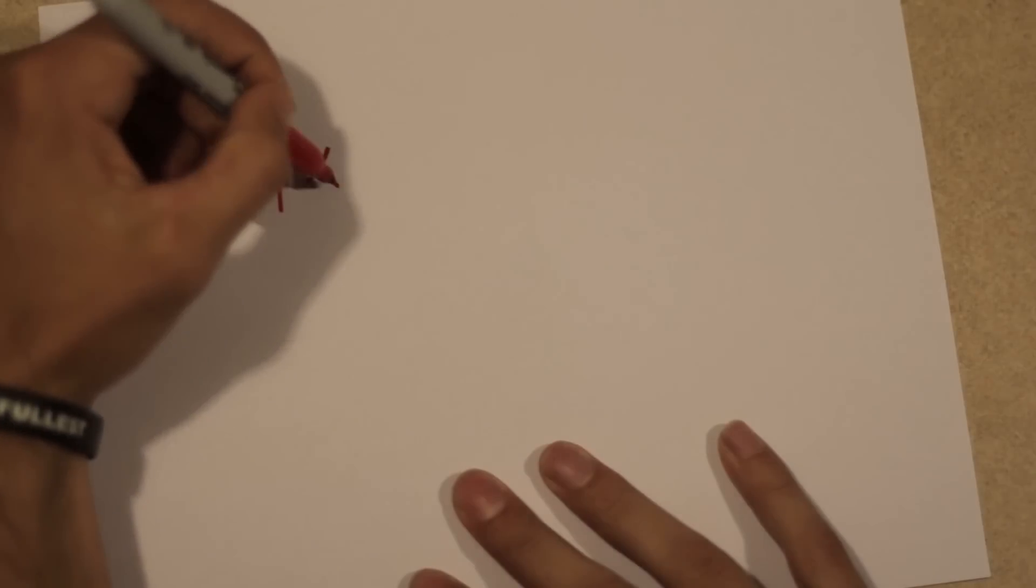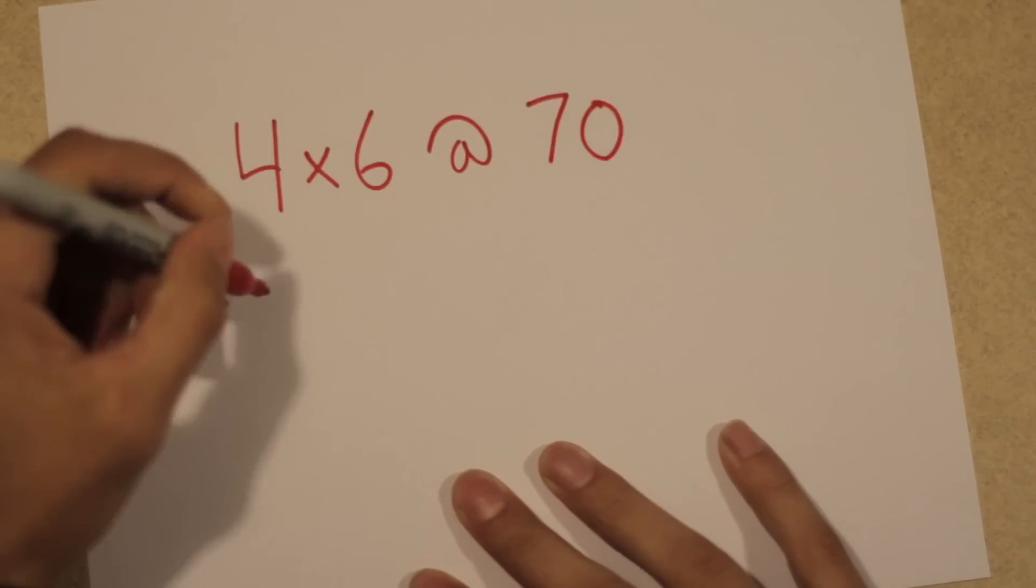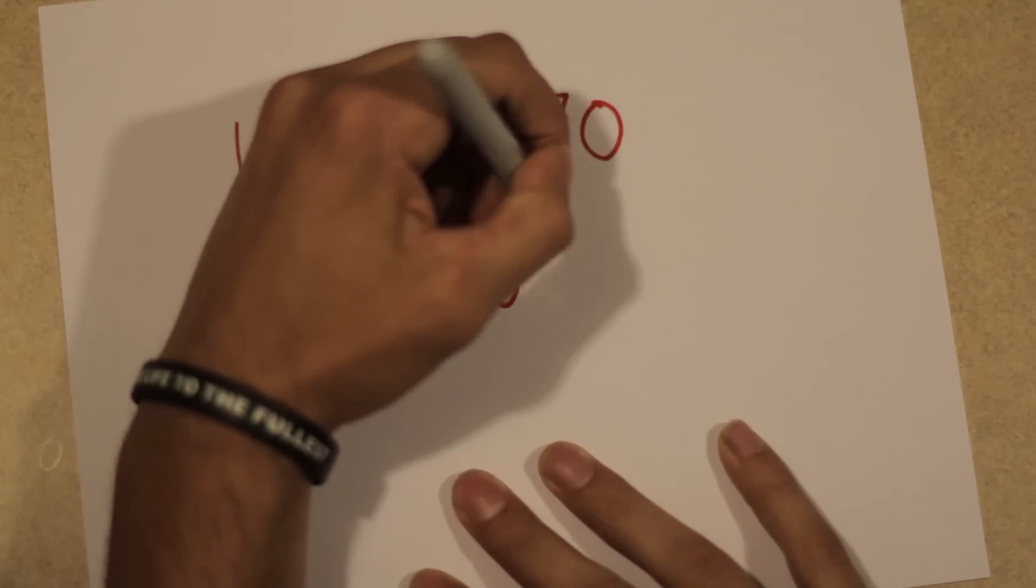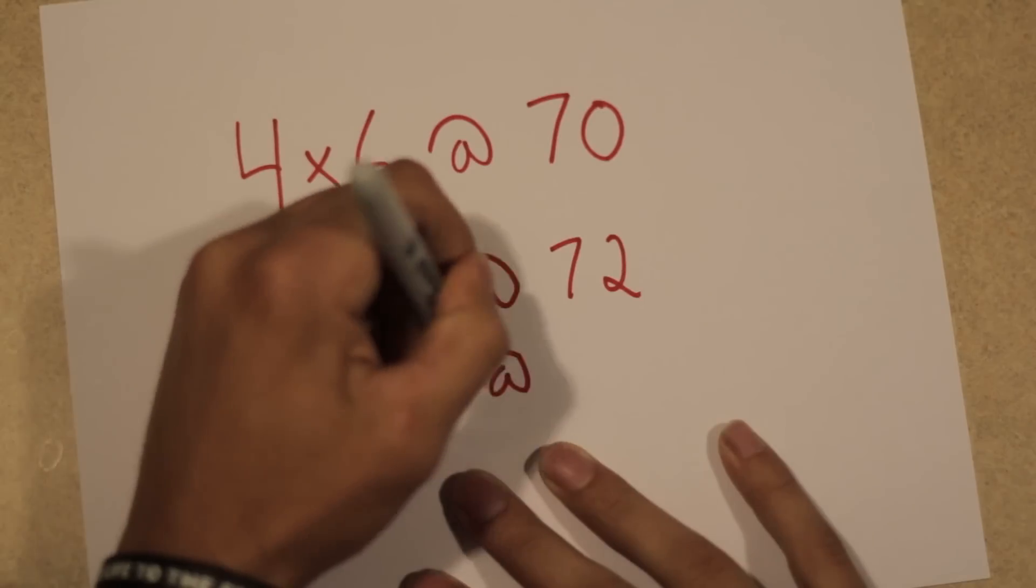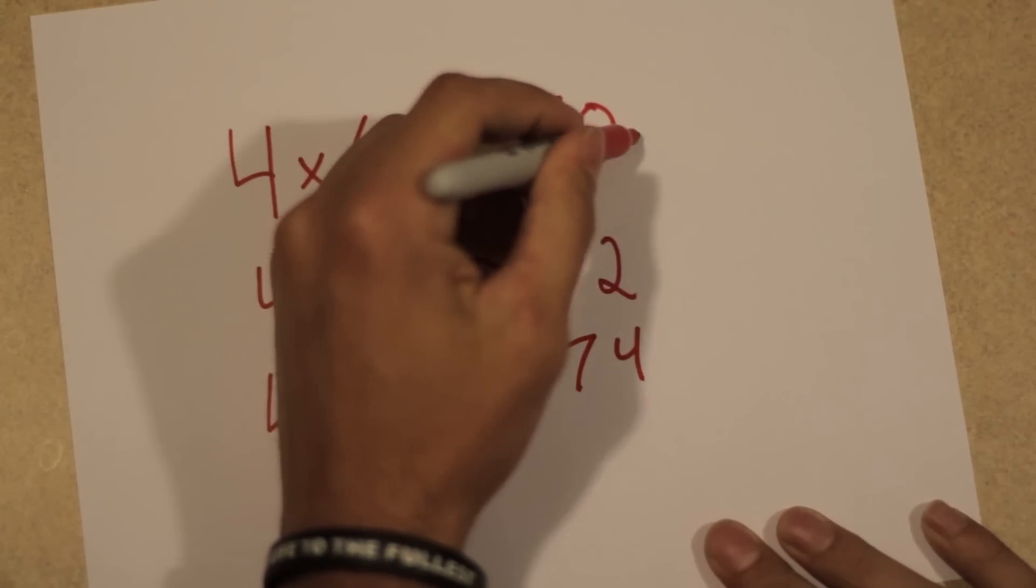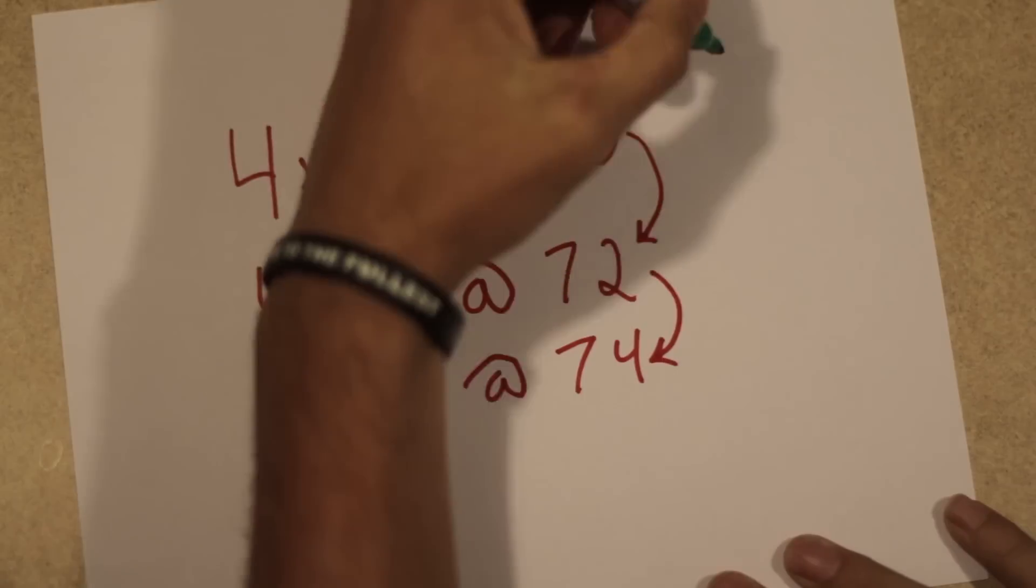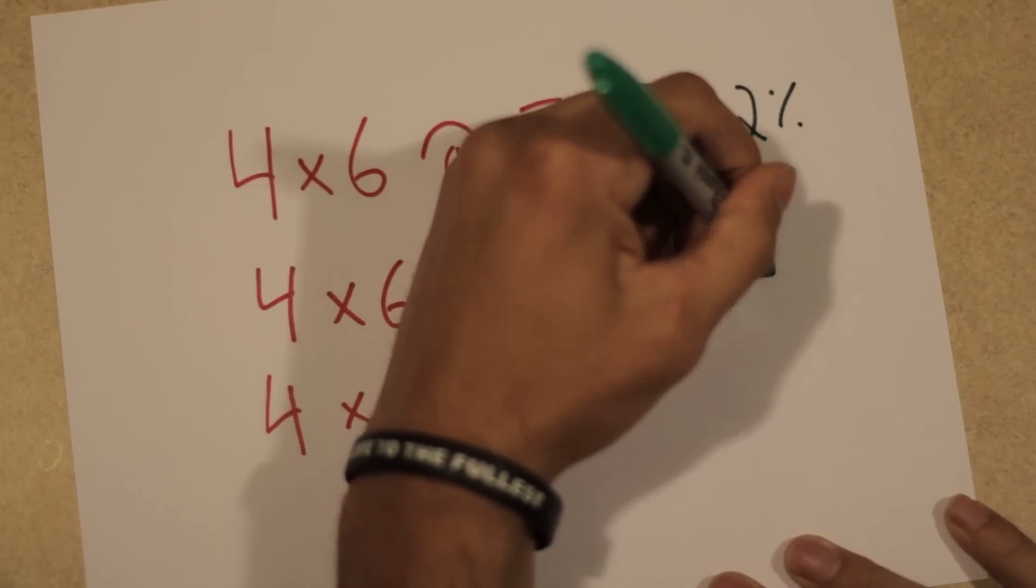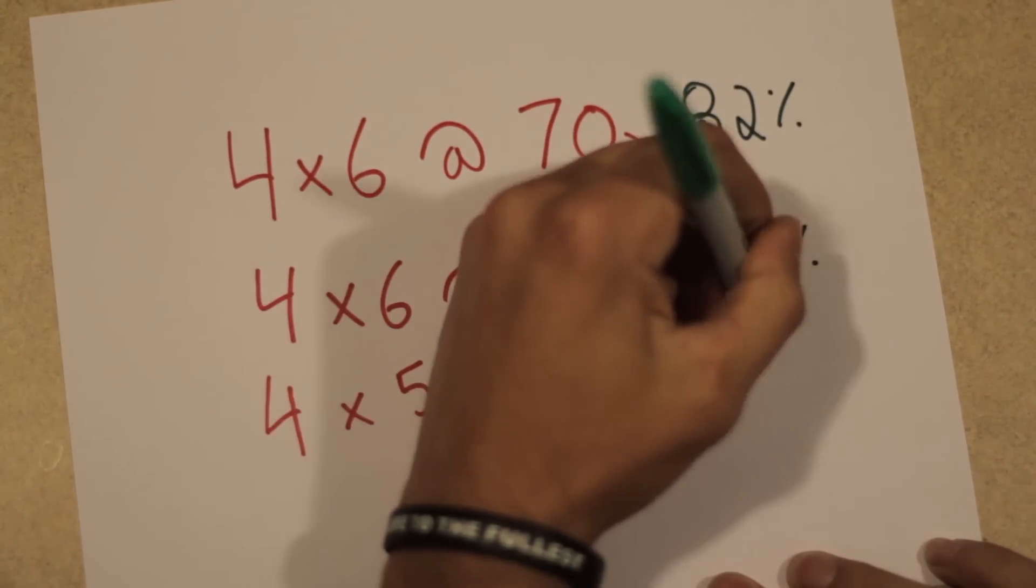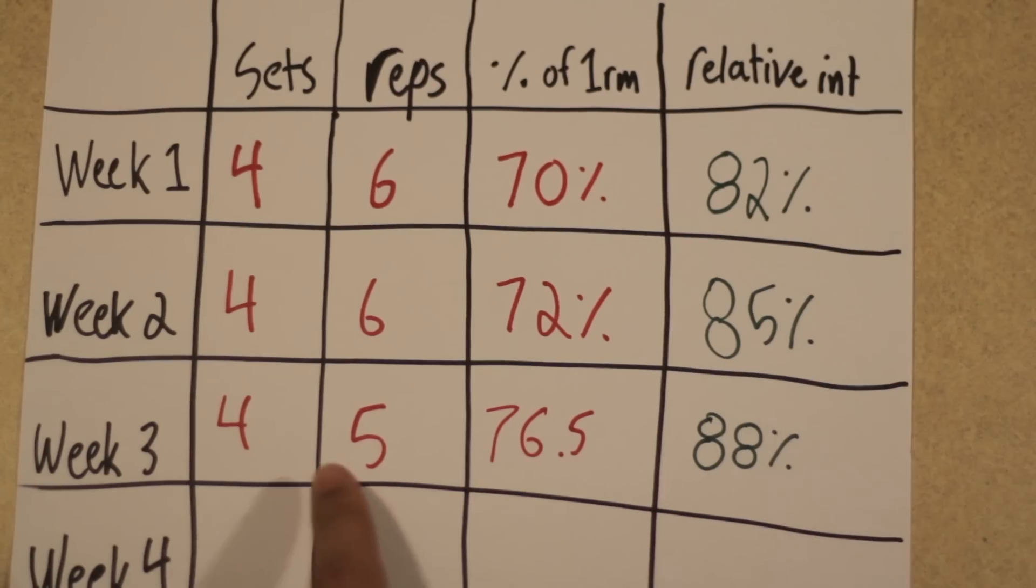Here is why relative intensity is so damn important. If I decide to do this as my first 3 weeks: 4x6 at 70% actual intensity, 4x6 at 72% actual intensity, and 4x5 at 74% actual intensity. Although it looks like I progressed from week 2 to week 3, I actually didn't at all, because the relative intensities of week 2 and week 3 are exactly the same at 85%. What I should do is 4x5 at 76.5% actual intensity.